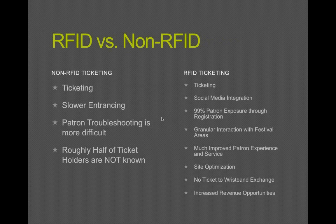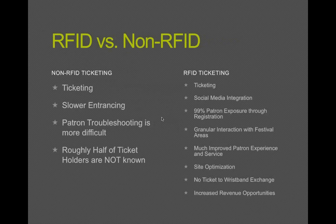Roughly half of ticket holders are not known. The basic rule is that the average tickets per order is two. So with traditional ticketing systems, we only know about half our customers. Some festivals have done programs to try to get people to interact and submit their registration, but it's very manual and not extremely effective. That's kind of your basic problem with that comparison.